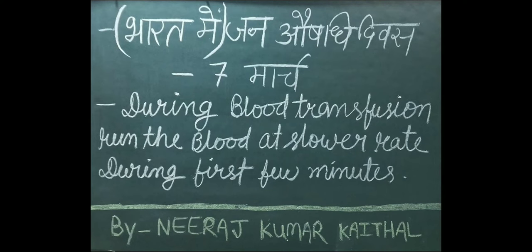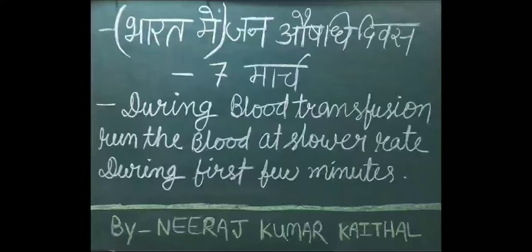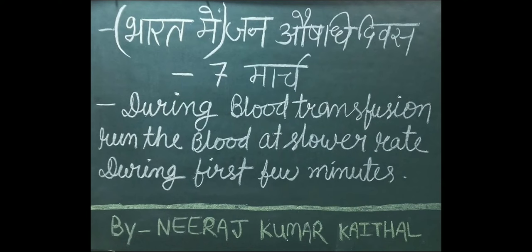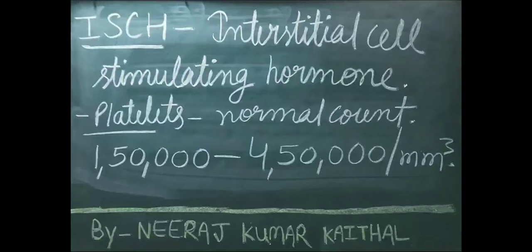During blood transfusion, run the blood at a slower rate during the first few minutes. Jab kisi patient mein aap blood transfuse kar rahe hain, shuruwat ke kuch minutes mein blood transfusion bilkul slow karna chahiye. Phir uske baad aap uski speed bada sakti hain yadi koi reaction nahi hui hai toh. ICSH ka full form hai Interstitial Cell Stimulating Hormone.